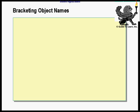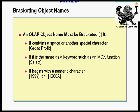As far as bracketing object names, an OLAP object name must be bracketed if the following conditions are true: if you have a space or special character in the name, you must enclose it in brackets — this is very similar to SQL ANSI. If the name is the same as a keyword, like SELECT, you also need to use brackets. And if the name starts with a numerical character, you must bracket it. So there are three conditions: special character or space, starts with a numerical value, or is a keyword.